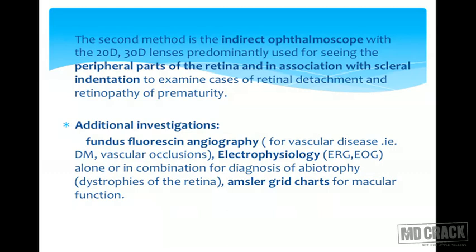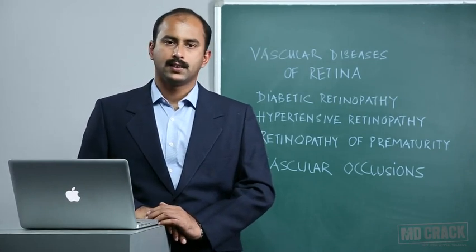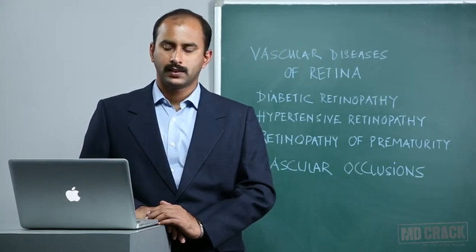Additional investigations that are very important and act as diagnostic tools include fundus fluorescent angiography, especially for diabetes and vascular occlusions; electrophysiology, consisting of the electroretinogram and electrooculogram, alone or in combination with FFA, especially for diagnosing abiotrophy of the retina; and Amsler grid charts, which are used for testing macular function. As a routine, we start with clinical anatomy and applied physiology to help understand the pathological processes.